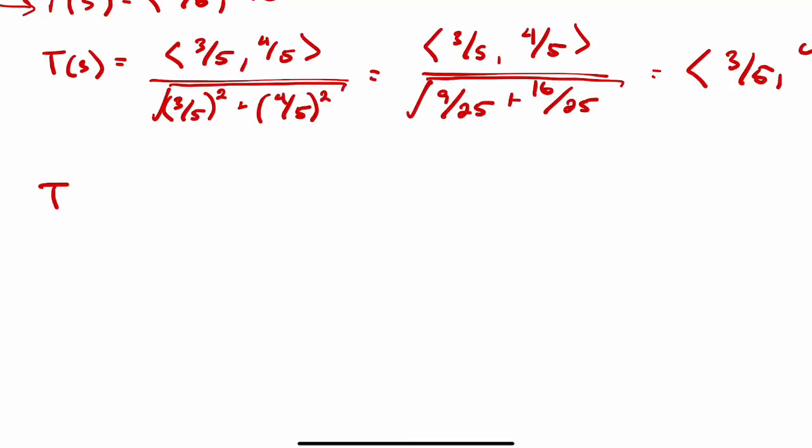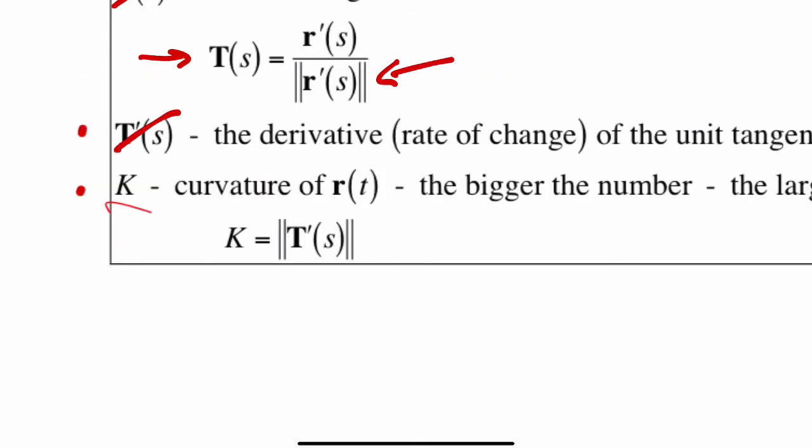Next we can find T'(s). Since we have a constant for both the x and the y components, that means that both of those guys are just going to go to 0. So we get 0 comma 0. So there's T'(s) done.